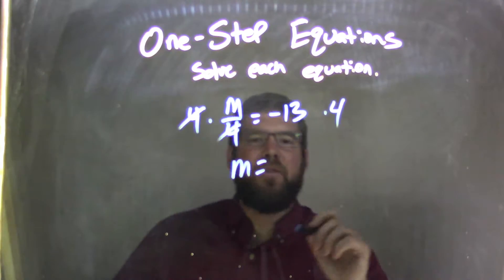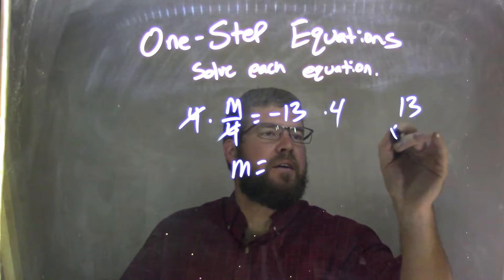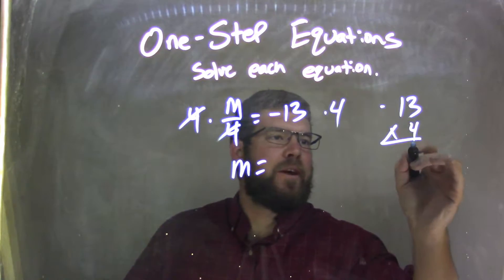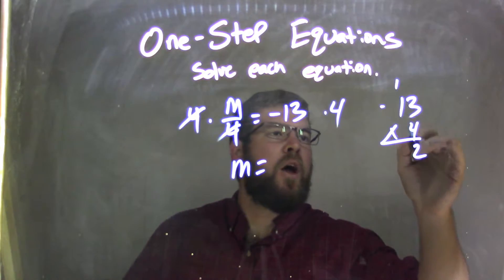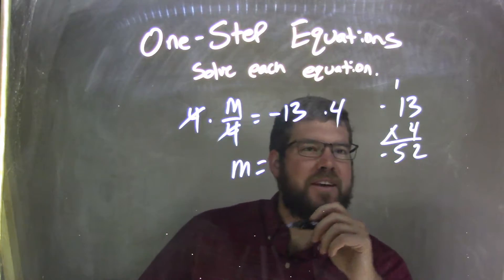Now I'm left with negative 13 times 4. If you need to do the traditional method, negative 13 times 4: 4 times 3 is 12, carry the 1. 4 times 1 is 4, plus 1 is 5, and we have negative 52.